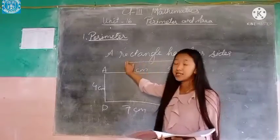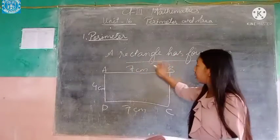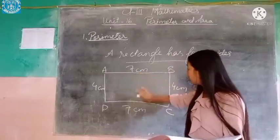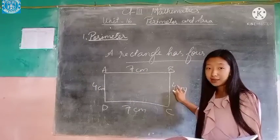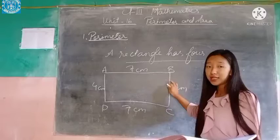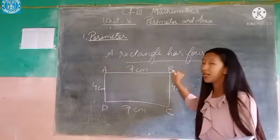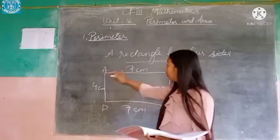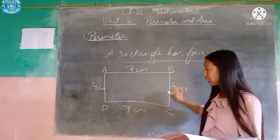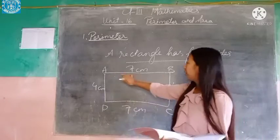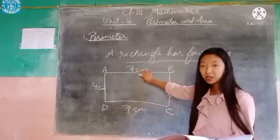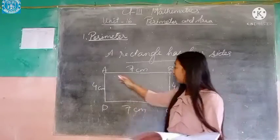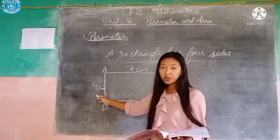Now let's look at the present example. The first example here is about the rectangle that is given. In the rectangle there are four sides: one, two, three and four. We name the length of these four sides as A, B, C and D. The measurement of AB is 7 cm, BC is 4 cm, CD is 7 cm, and AD is 4 cm.